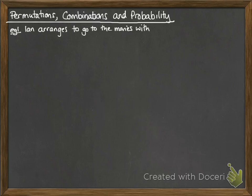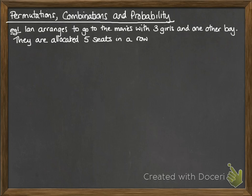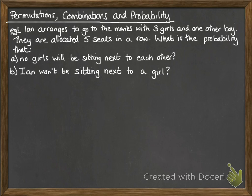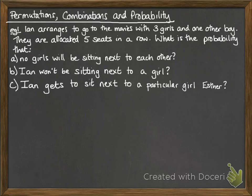Ian arranges to go to the movies with three girls and one other boy — so two boys, three girls. They're allocated five seats in a row. What's the probability that, firstly, no girls will be sitting next to each other? Secondly, Ian won't be sitting next to a girl. And the last one: Ian gets to sit next to a particular girl that he likes, Esther.